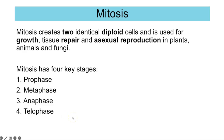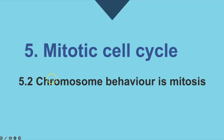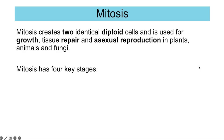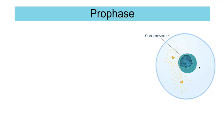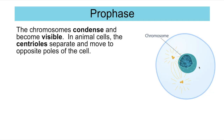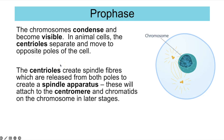In prophase, chromosomes condense — they coil up very tightly and become visible as individual chromosomes. In animal cells, the centrioles, which are responsible for releasing spindle fibres, normally sit together at one pole of the cell but start to move apart to opposite poles. The centrioles release spindle fibres from both poles to begin creating the spindle apparatus, which will attach to the centromere and chromatids in later stages. Plants also have a spindle apparatus but lack centrioles.